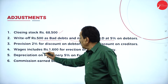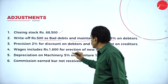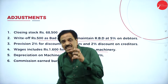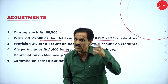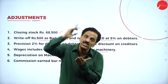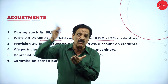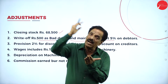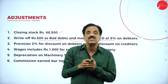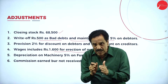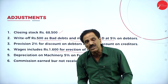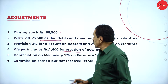Wages include 1,600 for erection of new machinery. Any wages paid for the sake of machinery — deduct from wages and add to machinery. Then you have to calculate the depreciation. First deduct from wages and add to machinery, then only calculate the depreciation.